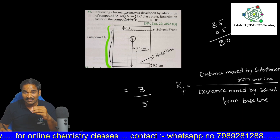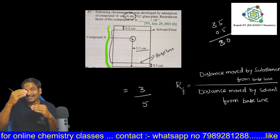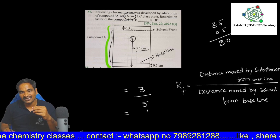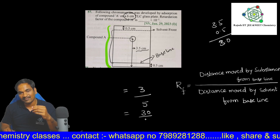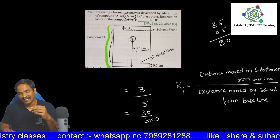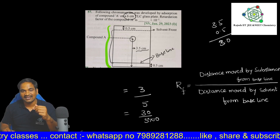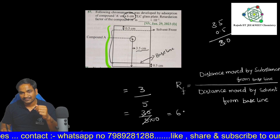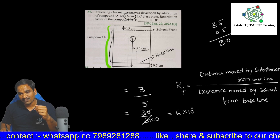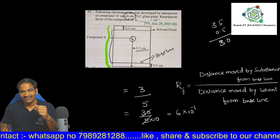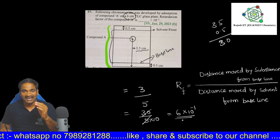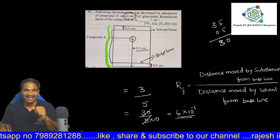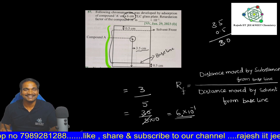So the distance moved by substance A from the baseline is 3, and the solvent distance is 5. Therefore RF = 3/5. For calculation: 30 divided by 50, which equals 6 × 10⁻¹. This is the retardation factor RF value of substance A. Thanks for watching, bye bye.